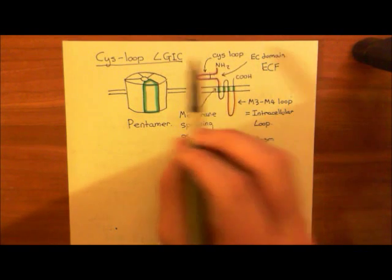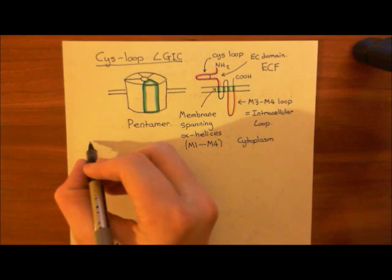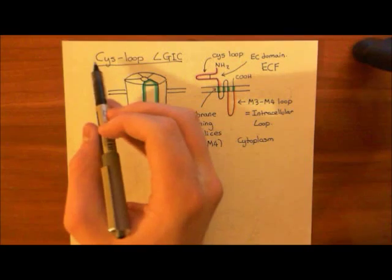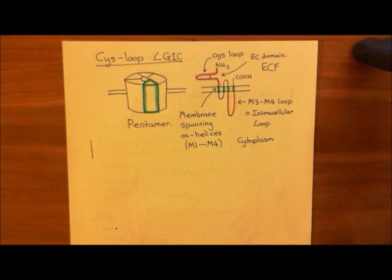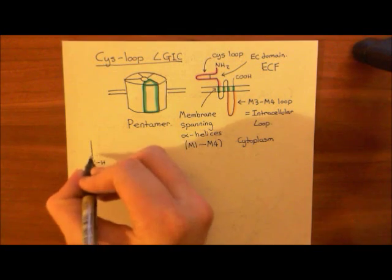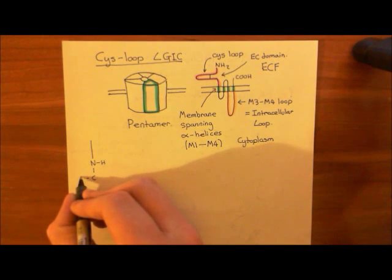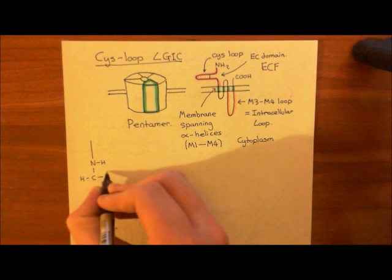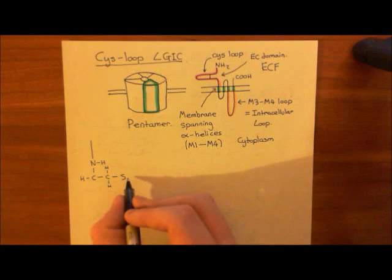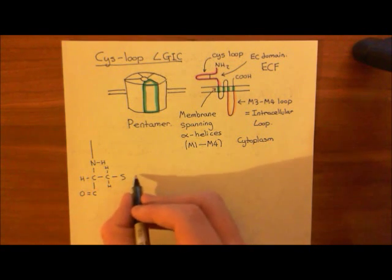Every single one of the subunits that makes up the pentamer has this cys-loop structure. A cys-loop is a loop in the structure of the polypeptide held together by disulfide bonds between cysteine amino acids — the three-letter amino acid code for cysteine is CYS. Here comes the polypeptide of this strand. You have the amino group of the cysteine amino acid, the alpha carbon, and the R group with a sulfhydryl group. This sulfur would normally have a hydrogen, but it's going to be involved in the formation of a disulfide bond.